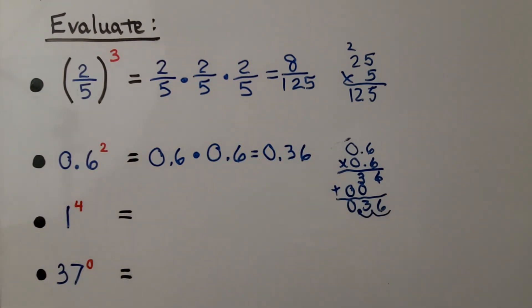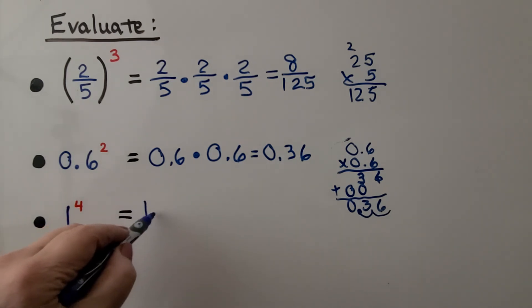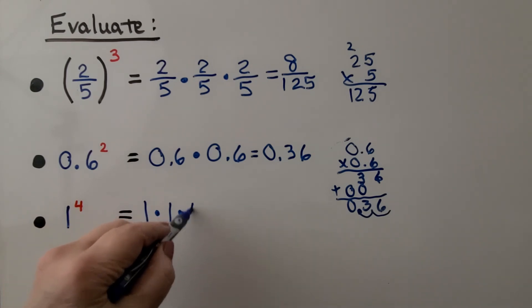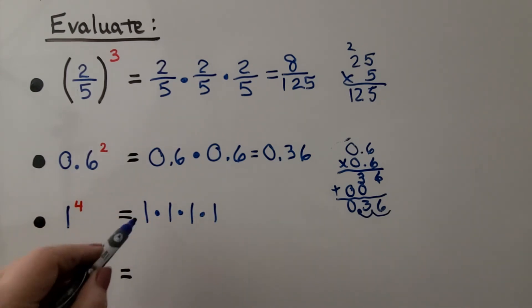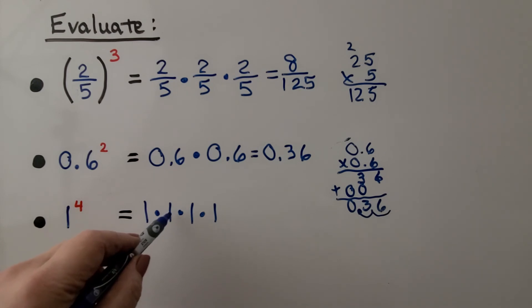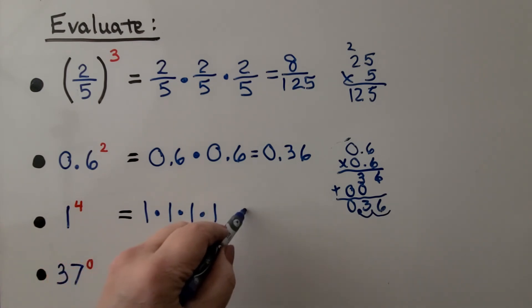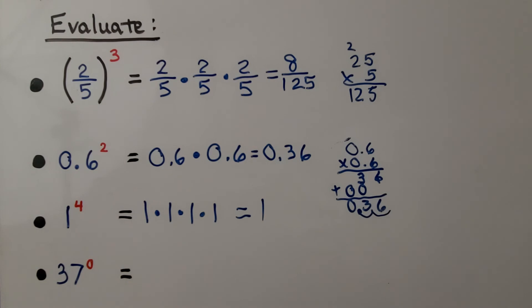Here we have 1 to the fourth power — that means we use 1 as a factor 4 times: 1 times 1 times 1 times 1. 1 times 1 is always 1, so it equals 1. For 37 raised to the 0 power, remember: any nonzero number raised to the power of 0 is 1. So 37 raised to the 0 power is 1.